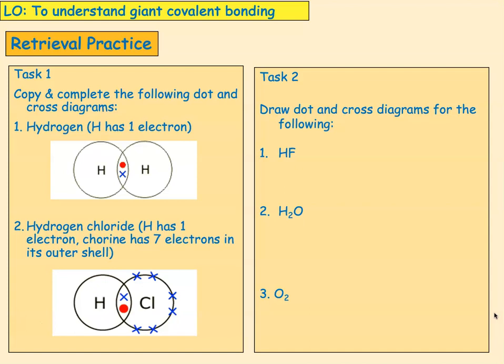Draw the dot and cross diagrams for the following. Hydrogen fluoride — it looks like that, the same as it did for hydrogen chloride. Seven electrons from fluorine, one electron hydrogen, and they share one electron each, so one covalent bond.